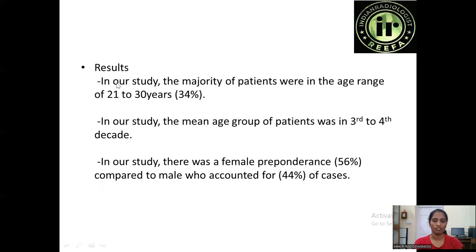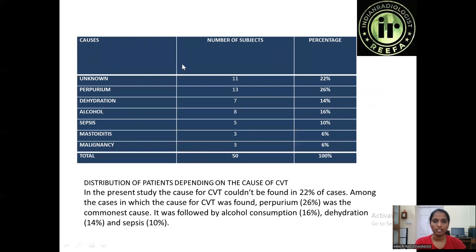Coming to the results, in our study the majority of patients were in the age group of 21 to 30 years, with the mean age in the third to fourth decade. There was a female preponderance compared to males, who accounted for 44% of cases. This chart shows the distribution of patients depending on the cause of CVT. In the present study, the cause of CVT could not be found in two post-additive cases. Among cases where the cause was found, puerperium was the commonest cause, followed by alcohol consumption, dehydration, and sepsis.